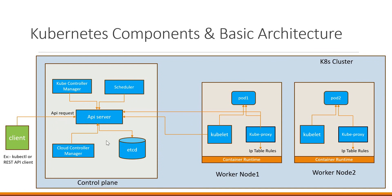We have one more component: the cloud controller manager. Similar to the kube controller manager, this is another component in the control plane, but it is related to the cloud provider API. For example, if we deploy our cluster inside AWS, GCP, or Azure, this component will run. If we deploy our cluster in on-premise environments, this component will not run, because it interacts with the cloud provider API and links our Kubernetes cluster with it. Similar to the kube controller manager, it also has a number of controllers like node controller, service controller, and so on, which we will discuss in later videos.